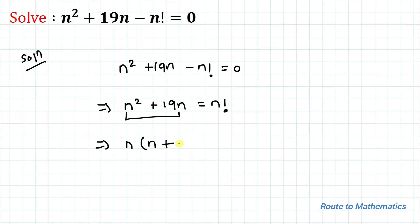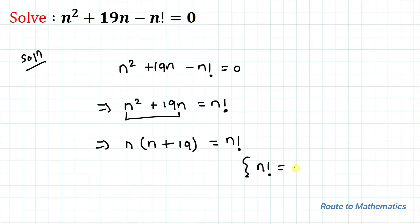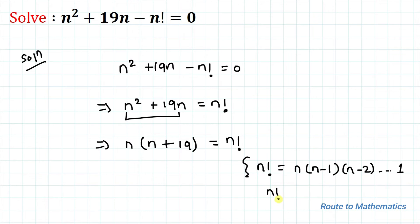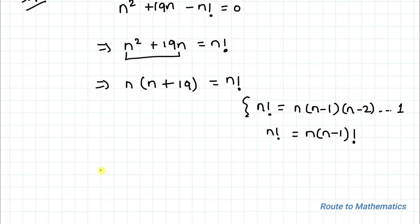I'll take n common from the two terms on the left, so we have n(n + 19) = n!. As we know, factorial is nothing but the product of all positive integers from the given number down to 1, so we can write n! as n × (n−1) × (n−2) × ... × 1.